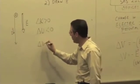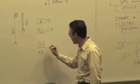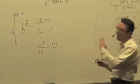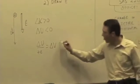Well, if I take this delta U and divide it by a positive charge, then that gives me delta V. That should also be less than zero, negative.